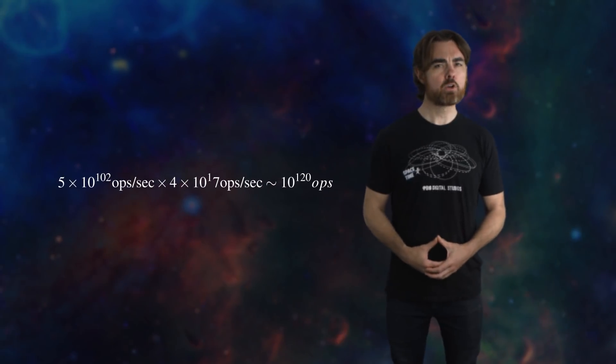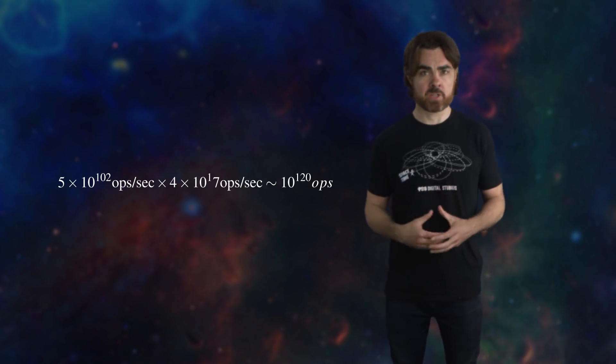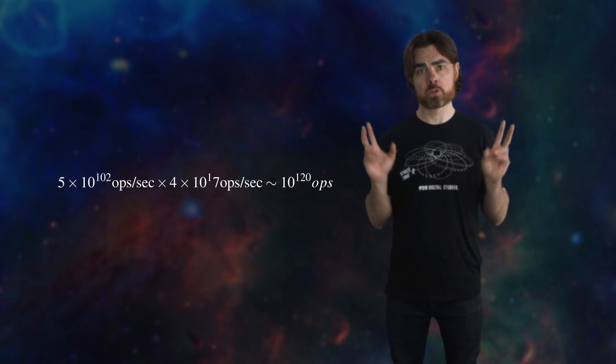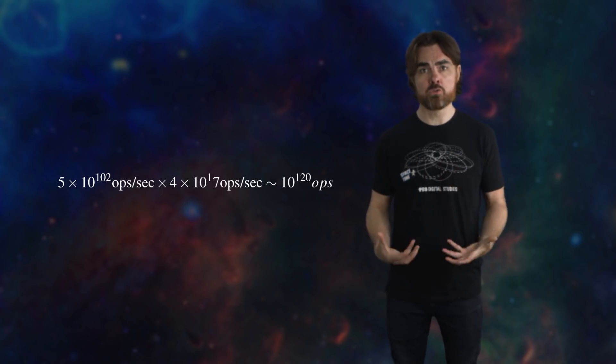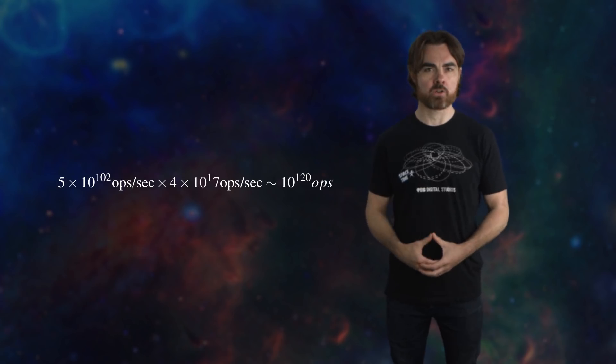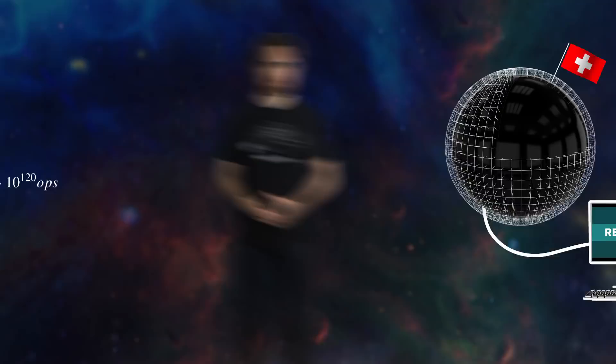The universe has been around for 13.8 billion years, or 4 by 10 to the power of 17 seconds. So it could have performed around 10 to the power of 120 operations in that time. And that's actually independent of the number of particles or degrees of freedom the universe is using to do that computation. The number is based on its energy content, and it has to spread that computational power over its particles.